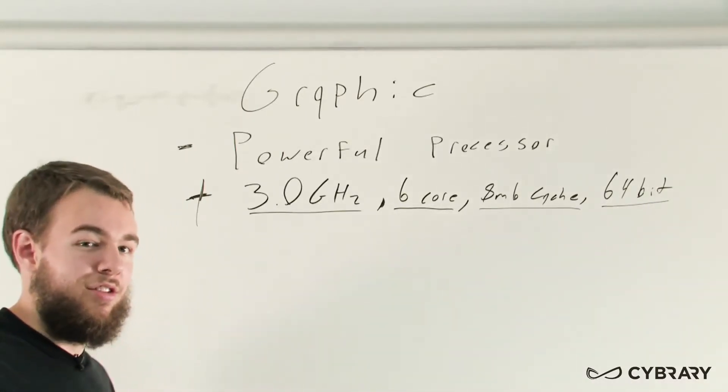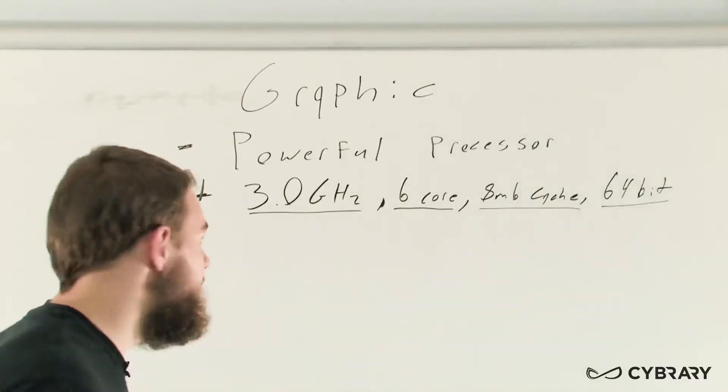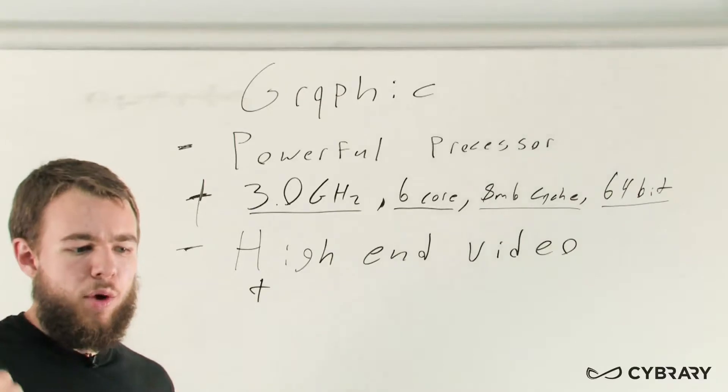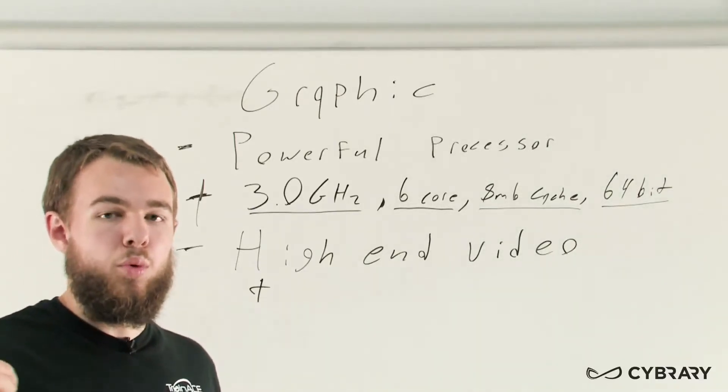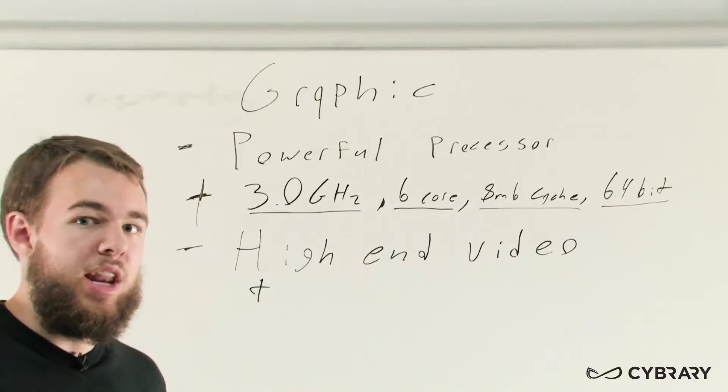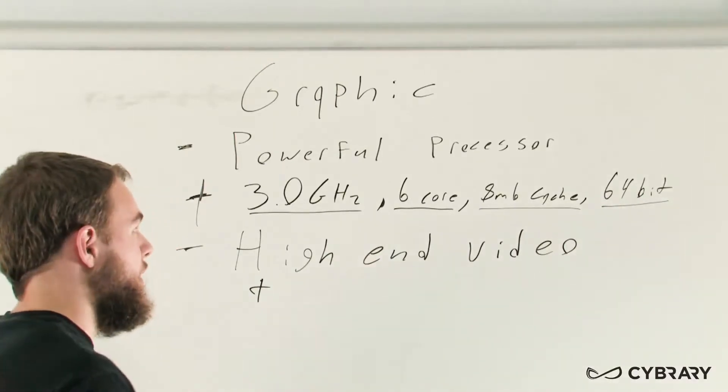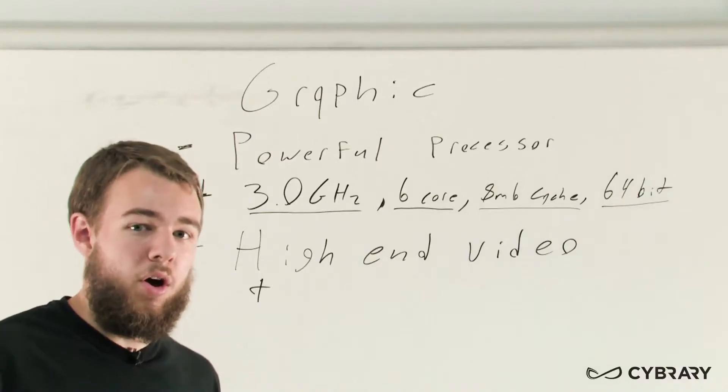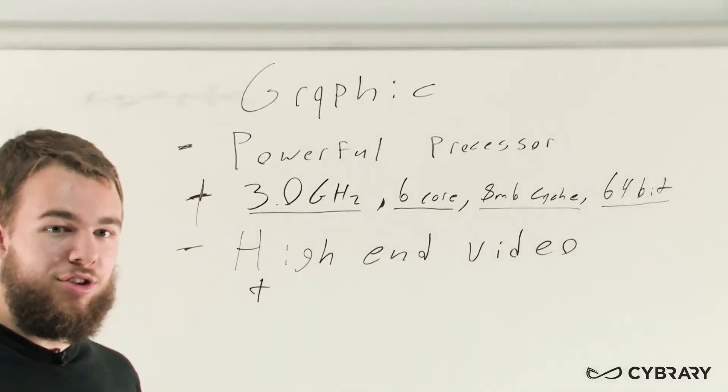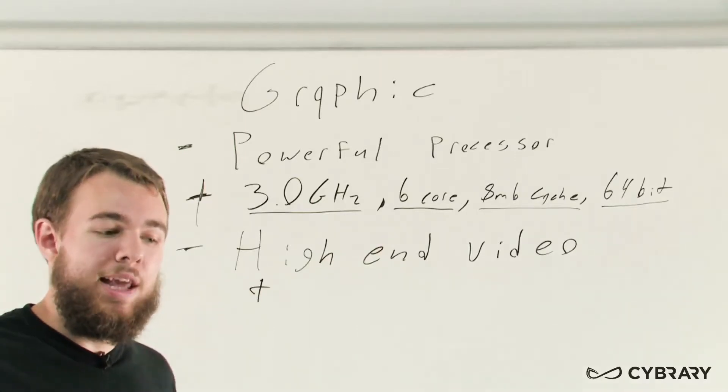Now, in addition to our powerful processor, we're also going to want our high-end video. When we're talking about high-end video, we're talking about a graphics card which allows us to render graphics directly from our applications, especially 3D graphics. If we're using this computer to render 3D models of cars, 3D models of houses, we're going to need that video card which allows us to render 3D graphics.